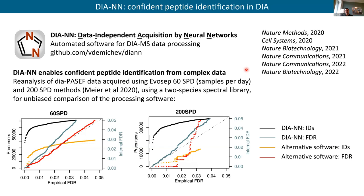The work started back in 2017, when a 30-minute gradient was considered super fast. The main gain was with very fast methods: with a medium-length gradient like Evosep 60 SPD at about 21 minutes, we got a moderate advantage over alternative software, whereas with very fast gradients like 200 SPD, we got a huge advantage. The primary reason was our neural network-based approach for distinguishing true signals from noise, allowing confident peptide identification no matter how complex the data.